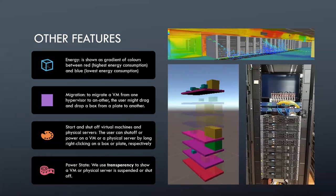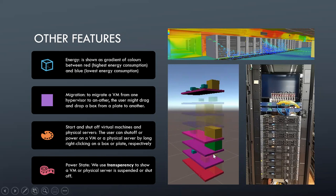Next we can talk about migration. To migrate a VM from one hypervisor to another, the user drags and drops a box from one plate to another. For example, if I want to migrate this VM from this hypervisor to this one, I just drag and drop, and that will send a POST request to the API signifying that a migration of this VM to the target hypervisor is taking place.